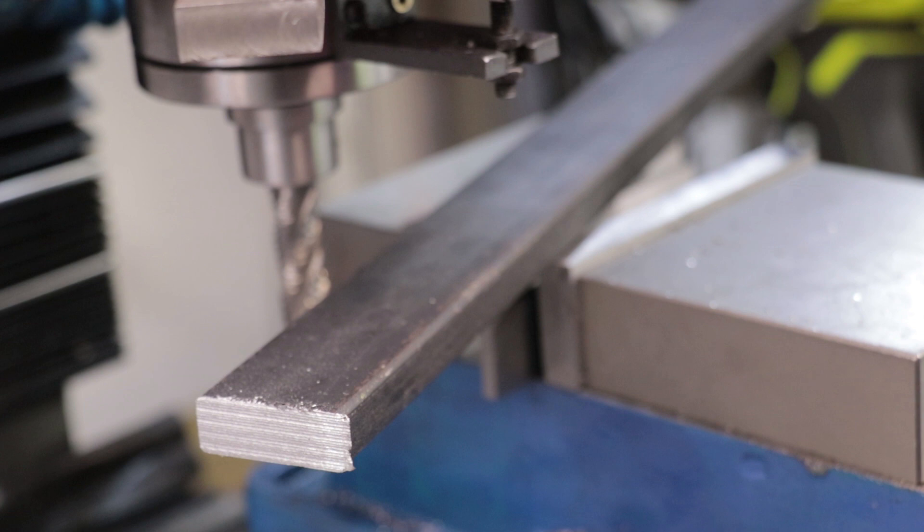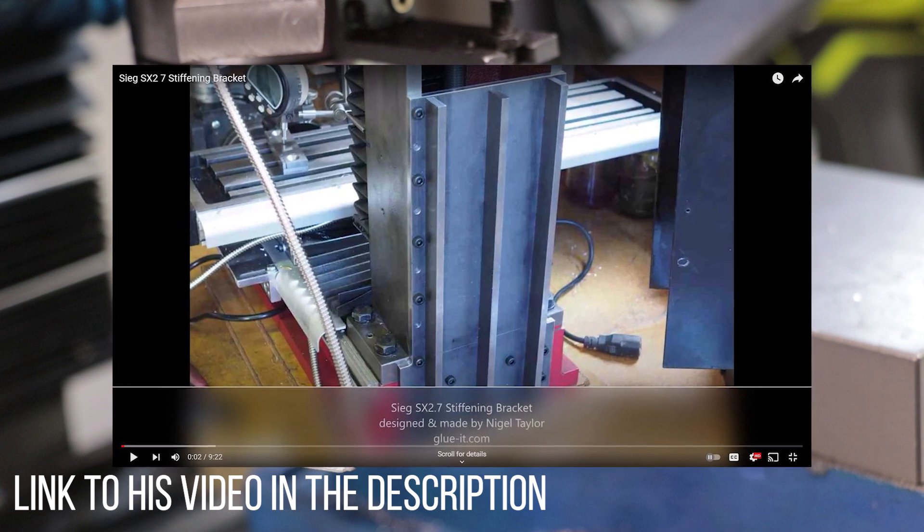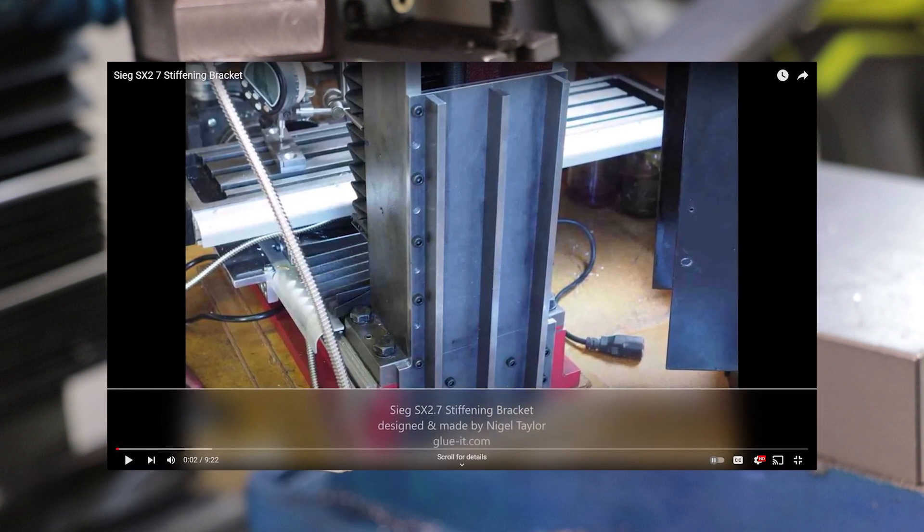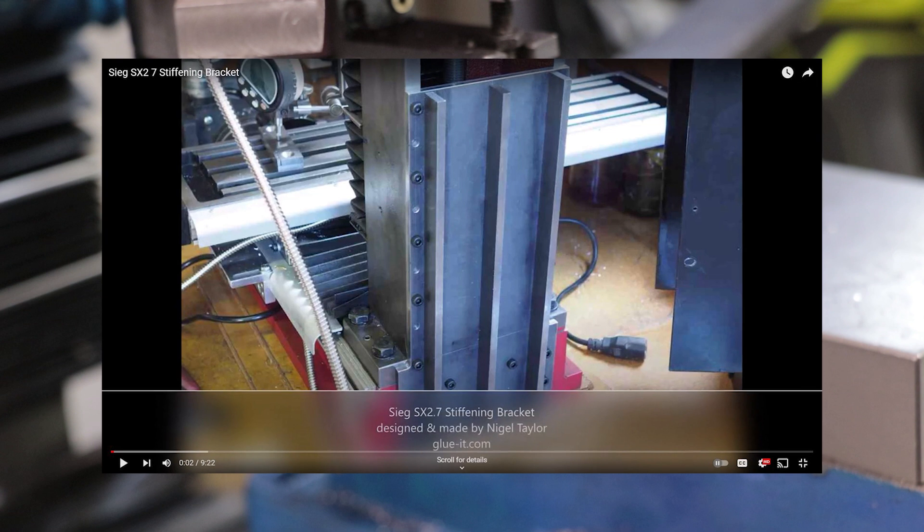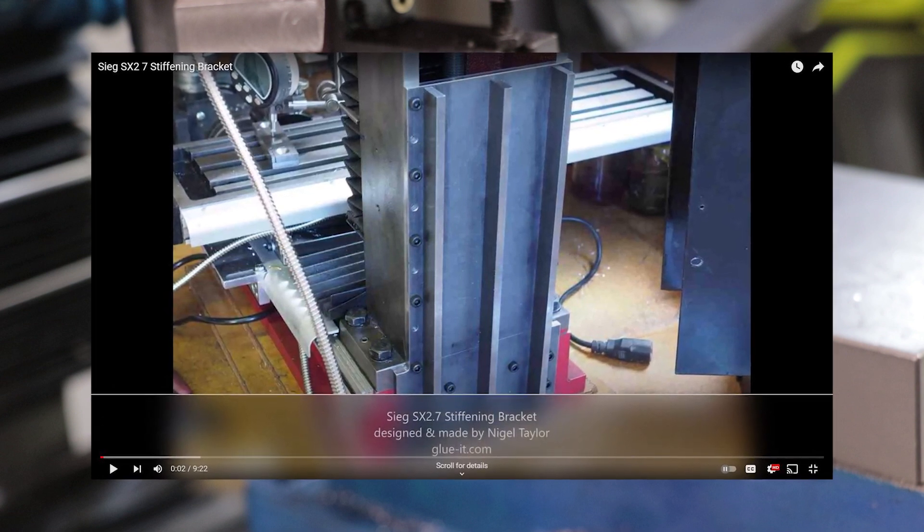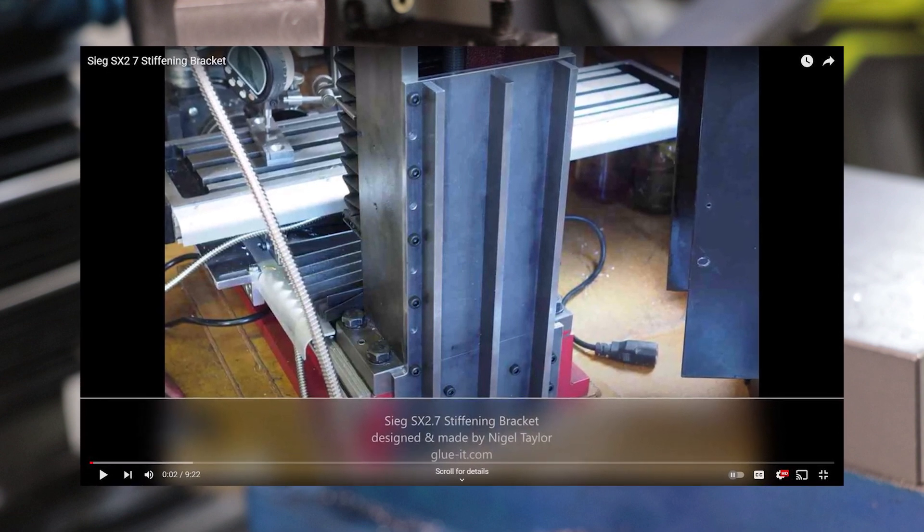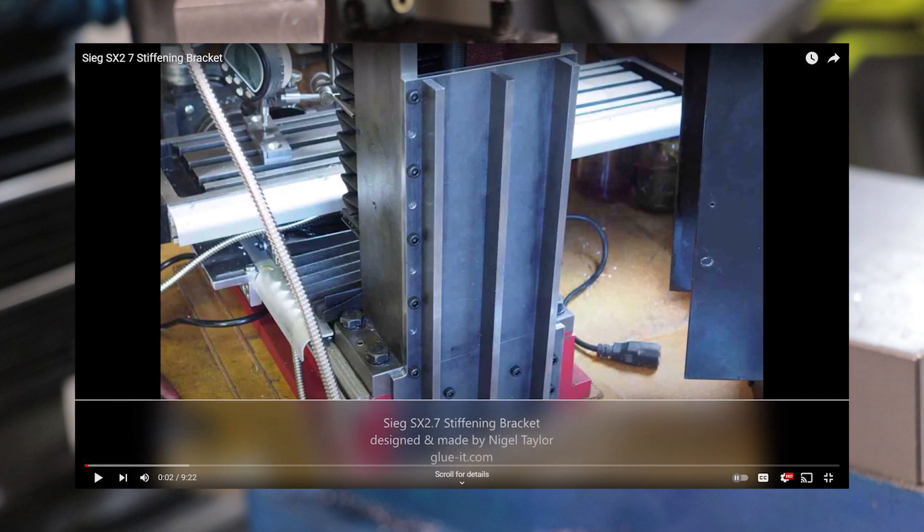Now I do understand that getting a piece of 20 millimeter plate might be difficult but a YouTuber that I was watching called Nigel Taylor did this a while back and what he did was he got some thinner plate and bolted on several ribs of steel bar. Now you won't get the added benefit of having the extra mass but the ribs shaped like this will be fantastically rigid and you should see a huge improvement.